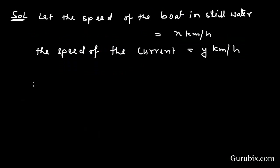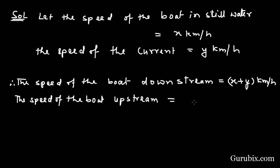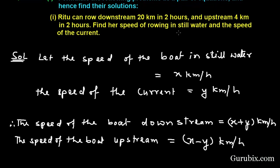Now we can find the speed of the boat downstream. We know that the speed of the current is added to the speed of the boat when a person goes downstream — that is, with the stream. So the combined speed downstream will be x plus y km per hour. And the speed of the boat upstream will be x minus y km per hour. Now we can easily form the pair of equations using this information.